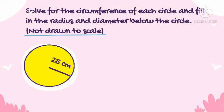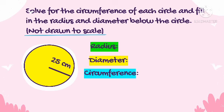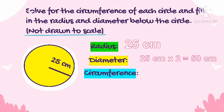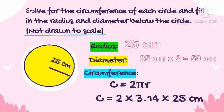Circle 2 has a radius of 25 cm. The radius is 25 cm. To find the diameter, multiply the radius by 2: 25 × 2 = 50 cm. To solve for the circumference, since radius is given, we use C = 2πR: C = 2 × 3.14 × 25 cm. The circumference is 157 cm. Remember, don't forget to write the unit of measurement in your final answer.